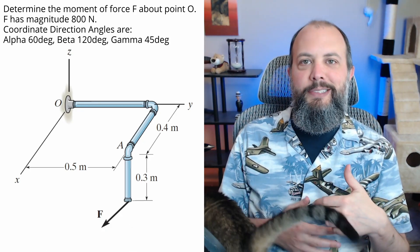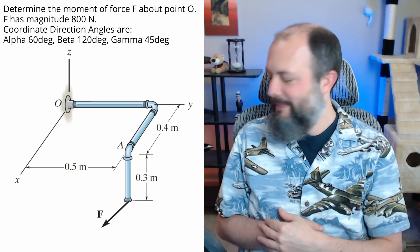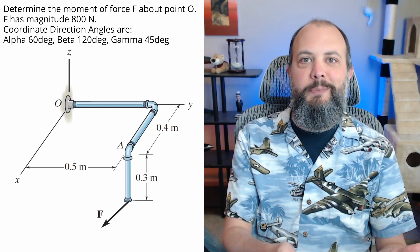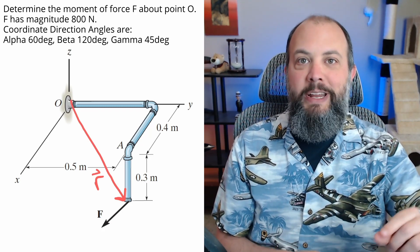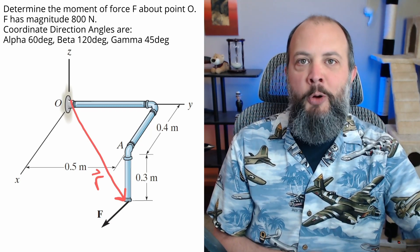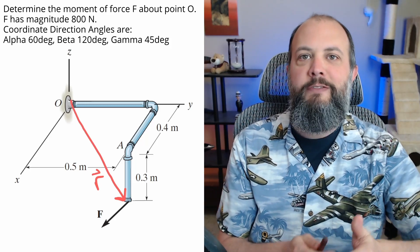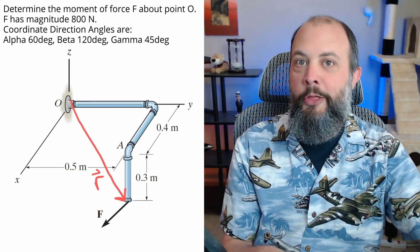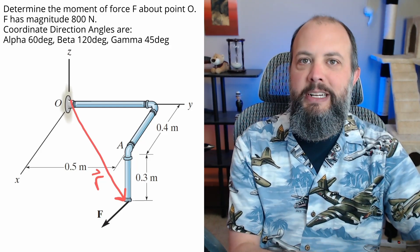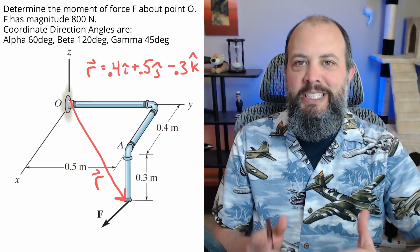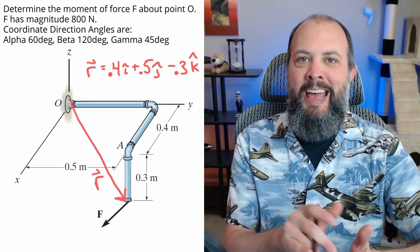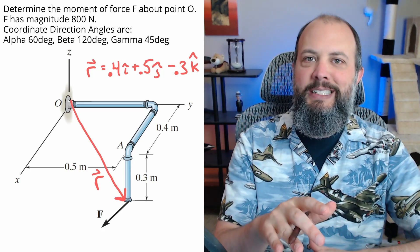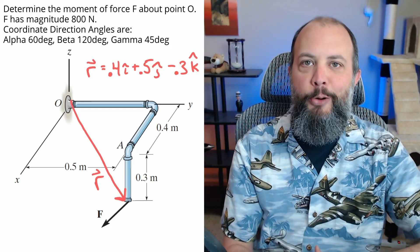But before showing you either of the methods, you need to actually find R and F for this system. Position vector R is going to point from the point of interest where you're trying to find the moment to the line of action of the force. This is usually easiest to find by the point of application of the force, although in the next example I'll show you an alternative. Using the dimensions on this picture, we can find that position vector R just using the x, y, and z components for i, j, and k. The k value is negative because it's in the negative z direction below the xy plane.